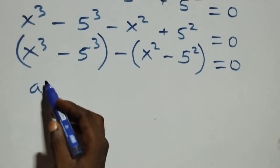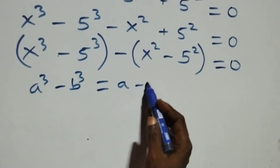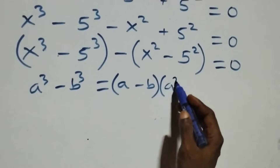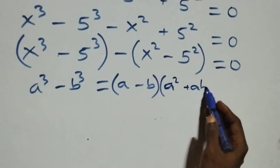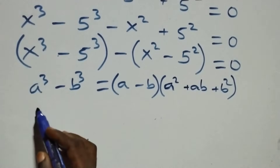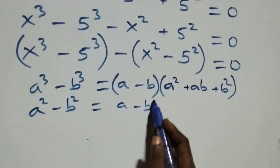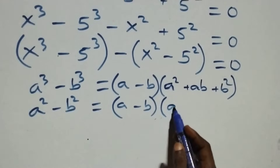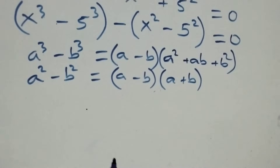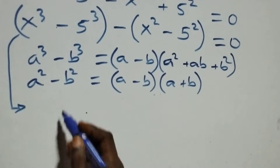From here, the first bracket follows the identity: a raised to the power 3 minus b raised to the power 3, which is the same as a minus b, into brackets, then open bracket a squared plus ab plus b squared. Also the second bracket follows: a squared minus b squared, which is the same as a minus b, into brackets, then open bracket a plus b.